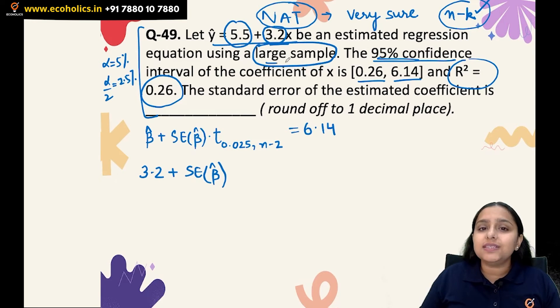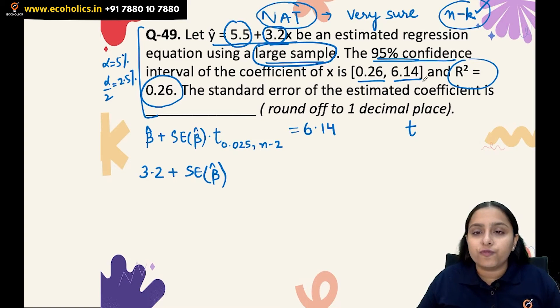Now how do we find the t-value? It is not given here. Since it is written that it's a large sample, large sample can be 30, 40, 50, anything. For large sample values, if we go to the t-tables, you can see that 0.025 will be approximately equal to 1.96.